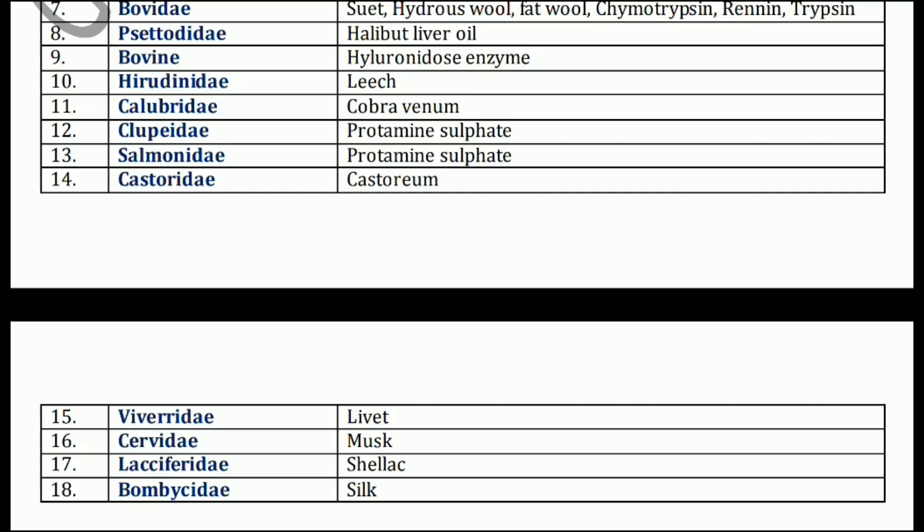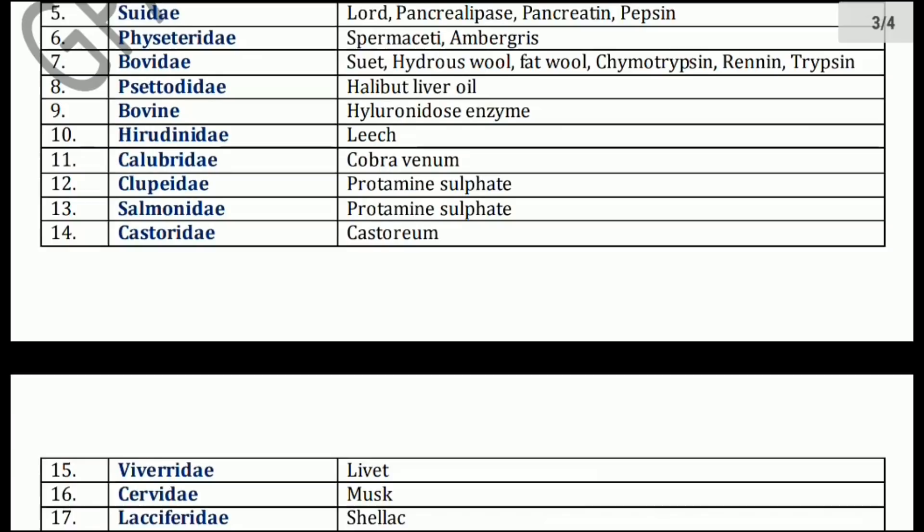Now next family is Viverridae family. Viverridae family includes Civet. Cervidae family includes Musk. Lacciferidae family — Shellac. And Bombycidae family — Shellac.